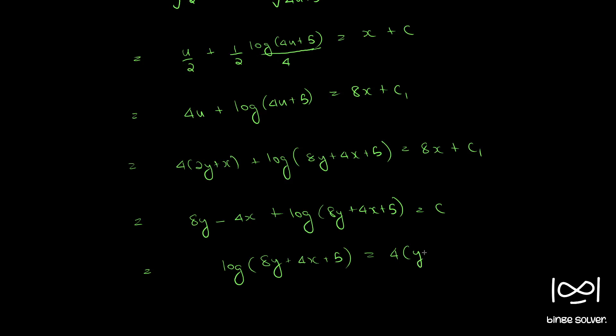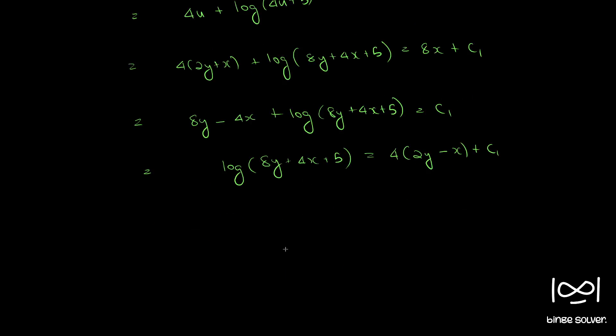Now taking e on both sides we get 8y plus 4x plus 5 equal to e power 4 into 2y minus x into e raised to c1, which I write as another constant c2.